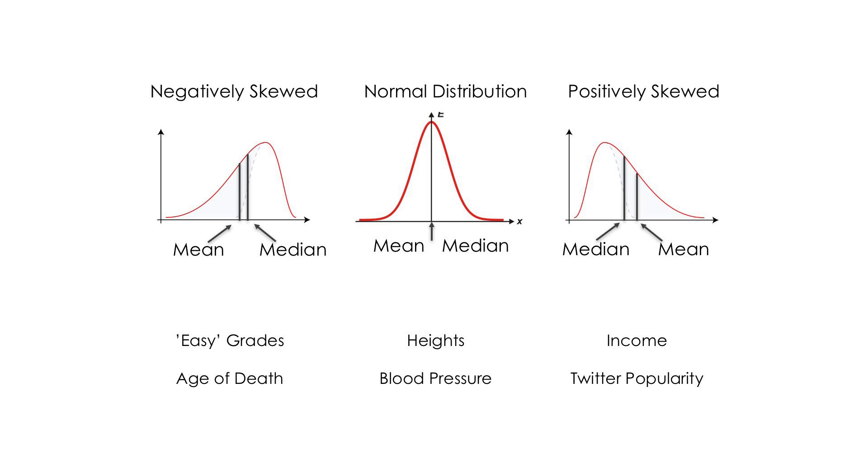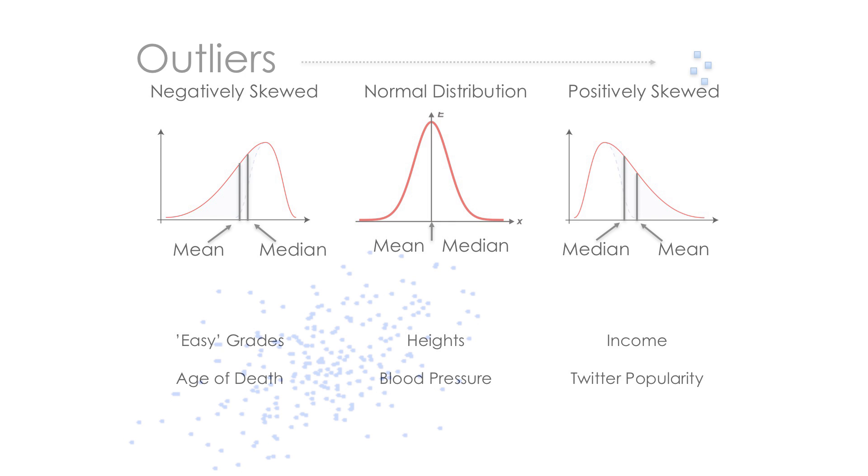So if you took all the ages of death in the United States, it would be skewed to the right. It would be negatively skewed. Like grades, as we get grade inflation, we get skewness in our grades. If you look at the university grades, which we have in our system, things that are positively skewed, you have a lot of things that are positively skewed. Income distribution is one. Twitter popularity, this is something you will find lots and lots of examples.